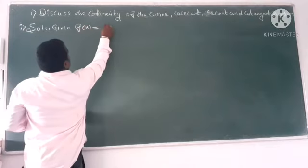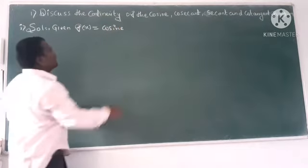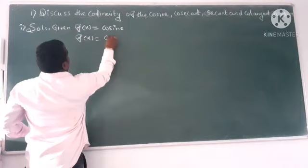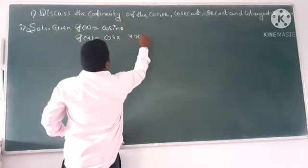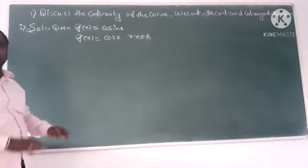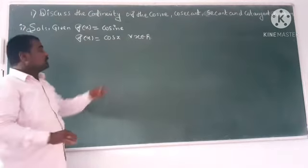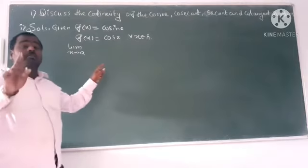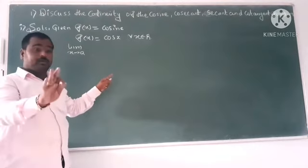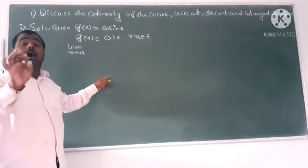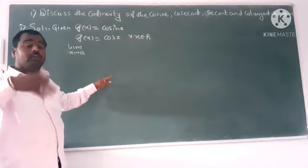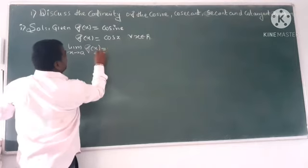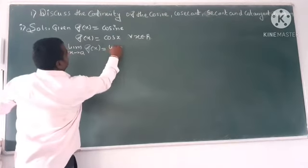First one I'm going to take. Solution given: f of x is equal to cosine function. What do you mean by cosine? I hope you know that expression. f of x is equal to cos x for all x belongs to R. That's just a very common thing. Look at this one. Apply for limit x tends to a, a means what, arbitrary value. It means that value is continuous.